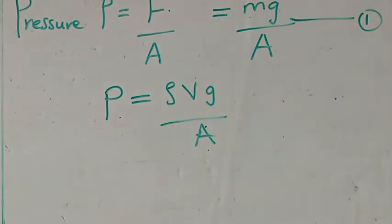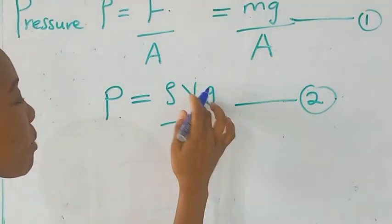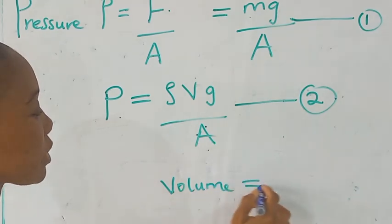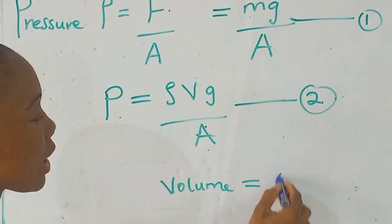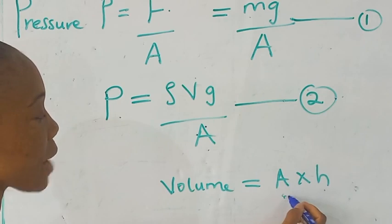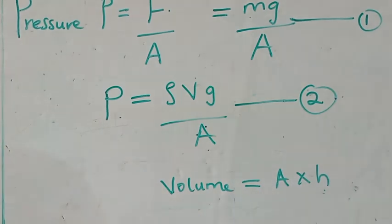We can go ahead and replace equation 2. Remember that volume is equal to area times height. Area in cm, cm squared, height in cm. That will give you volume as cm cubed.